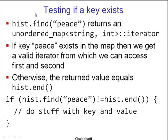You do that with the find method, just like find exists in vectors. You say in the histogram, try to find 'piece', and that returns another iterator. If the key 'piece' exists in the map, you get a valid iterator from which you can access first and second. First will be 'piece', second will be the count of 'piece'. But if the key did not exist, the histogram will not be modified — instead the returned iterator will be equal to his.end, which is a special value that shouldn't really be accessed.